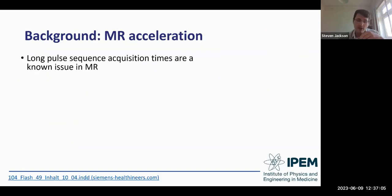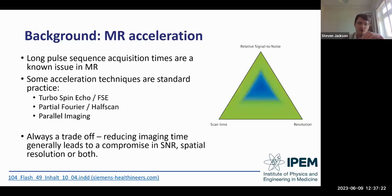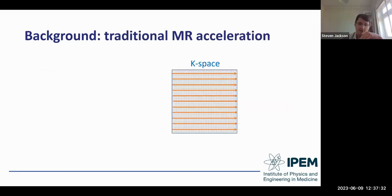We'll do a bit of background physics on MR acceleration. Long pulse sequence acquisition times are a known issue in MR. Some acceleration techniques are standard practice and have been around for many years — for example turbo spin echo, partial Fourier or half scan, and parallel imaging. But historically there's always been a trade-off: reducing imaging time generally leads to compromising SNR, spatial resolution, or both, certainly for routine imaging.